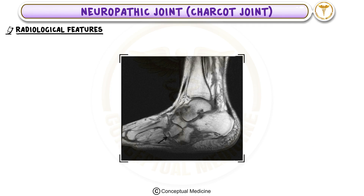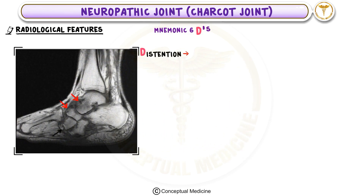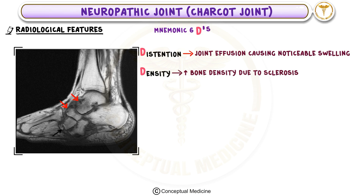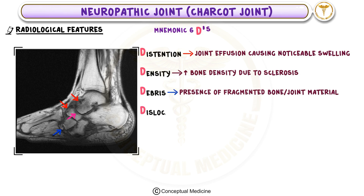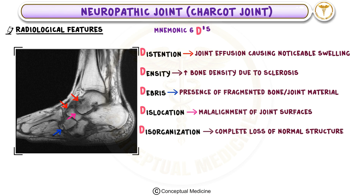Radiologists often describe the six D's to summarize the key imaging features: 1. Distention — joint effusion causing noticeable swelling. 2. Density — increased bone density due to sclerosis. 3. Debris — presence of fragmented bone and joint material. 4. Dislocation — malalignment of joint surfaces. 5. Disorganization — a complete loss of normal joint structure. 6. Destruction — severe bone loss and erosion.